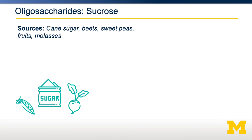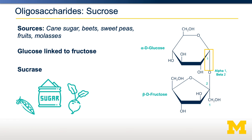Sucrose is commonly found as cane sugar made from beets, and can also be found in fruits and molasses. In sucrose, the anomeric carbon of glucose is connected to the anomeric carbon of fructose. Since the bond involves two anomeric carbons, we describe the orientation of both hydroxyl groups. From the glucose perspective, it's alpha (hydroxyl pointing down), making it an alpha-1 linkage. From the fructose perspective, it's beta (hydroxyl pointing up from carbon 2), making it a beta-2 bond. Therefore, the sucrose glycosidic bond is alpha-1, beta-2.